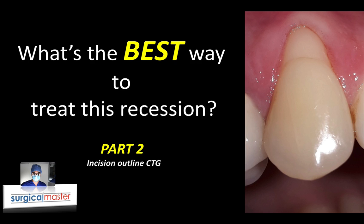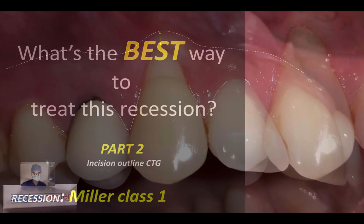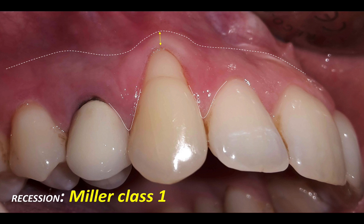So in part two, I'm going to talk specifically about the incision outline for the connective tissue graft. If you didn't watch part one, go back and watch it. You'll get an idea of how I evaluate the recession site before I treat it, what are the things that I look into, and then eventually make a decision on what I think is the best treatment option for this particular case.